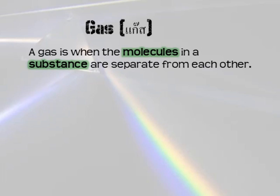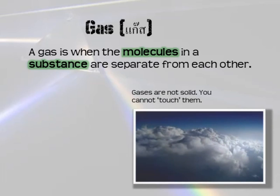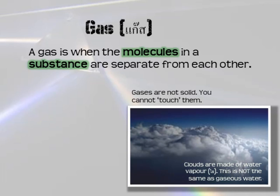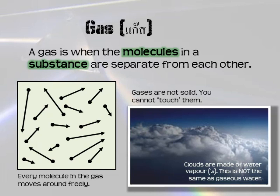Gas — not the gas you put in your car, but gas is when the molecules in a substance are separate from each other. Gases are not solid and you cannot touch them. Clouds are something you cannot touch, but clouds are made of water vapor, which is not the same as gaseous water. Gaseous water you cannot see — it is invisible. Here is a scientific model of gas: all the molecules in a gas move around at different speeds and different directions, all moving freely inside a space.